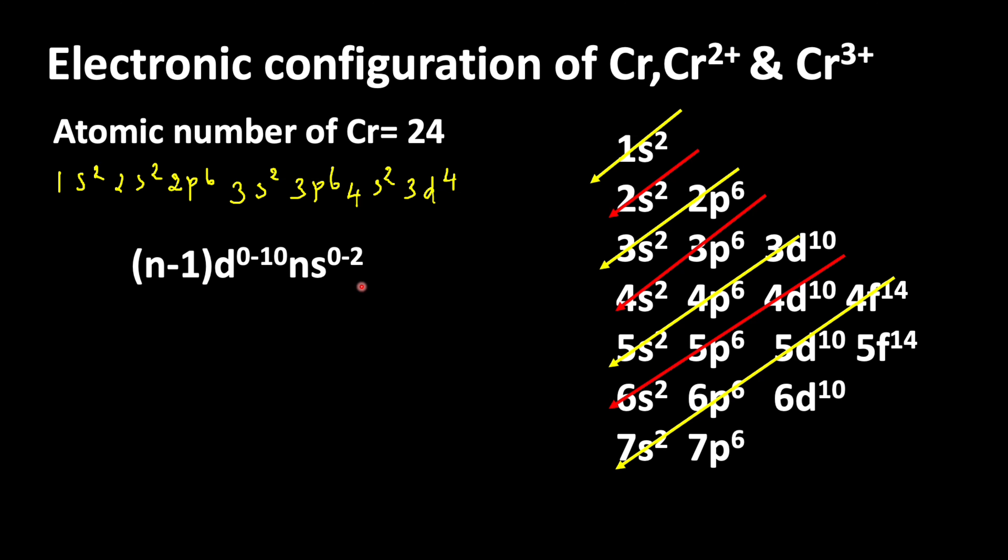After writing the 3d orbital, we write the 4s orbital. Making the necessary changes, the correct electronic configuration is 3d⁵ 4s¹. This is the complete electronic configuration of chromium.